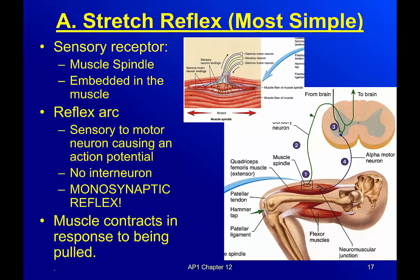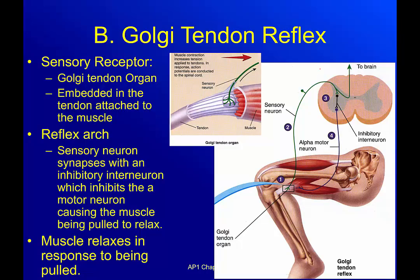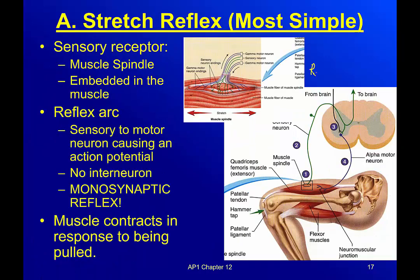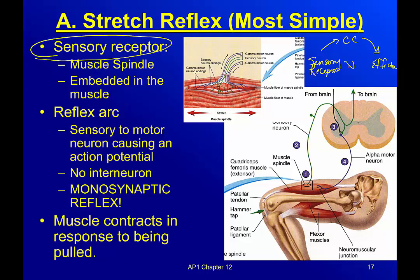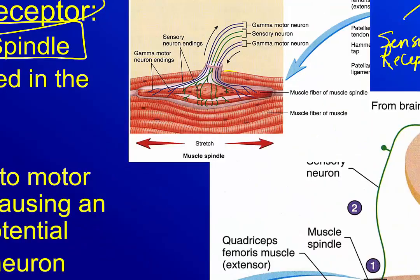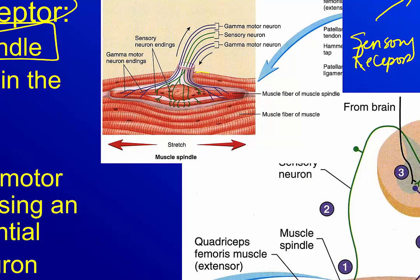So the stretch reflex. We have our receptor — our sensory receptor — our control center, and our effector in our reflex arc. In this case, the sensory receptor is something called a muscle spindle. The muscle spindle is actually embedded in our muscles.